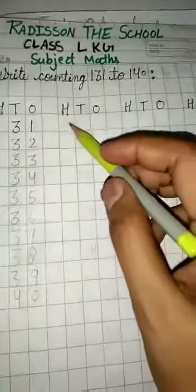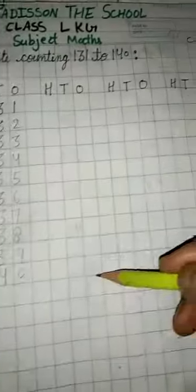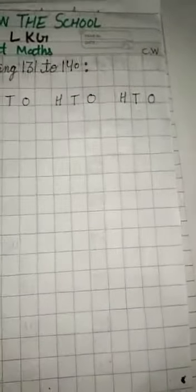140. Three ke baad kya aata hai four, so write here four. Then nine ke baad zero. This tarah se aapko three times ye karna hai. Here also 131 to 140, and 131 to 140. Is tarah se aapko complete karna hai.